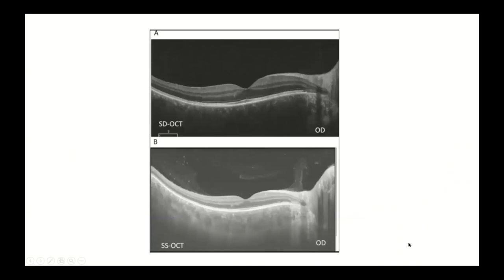Here are two pictures comparing a standard spectral domain OCT scan and a swept source OCT scan. The spectral domain image is still beautiful — you can see the foveal pit and multiple retinal layers. In the swept source image below, you can see even more detail: what appears as a smoky appearance represents the collagen fibers of the vitreous, and the dark areas — what some call the bursa premacularis — are visible here.